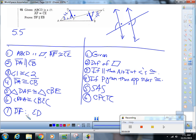is parallel to EB because if alternate exterior angles are congruent, then lines are parallel.